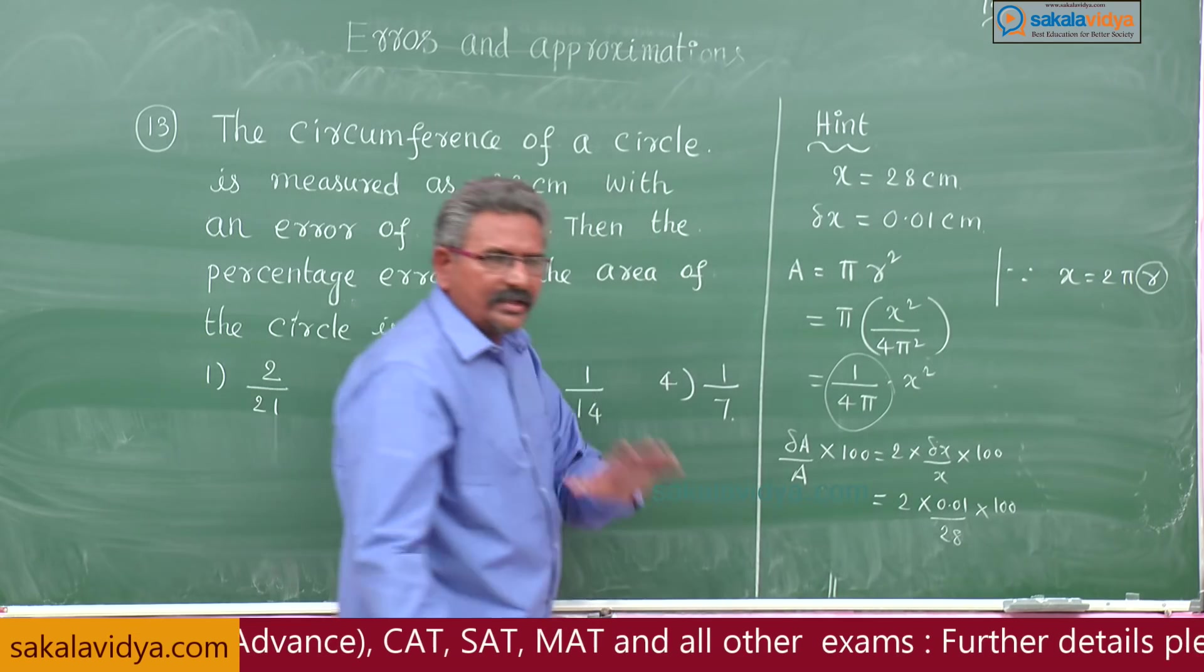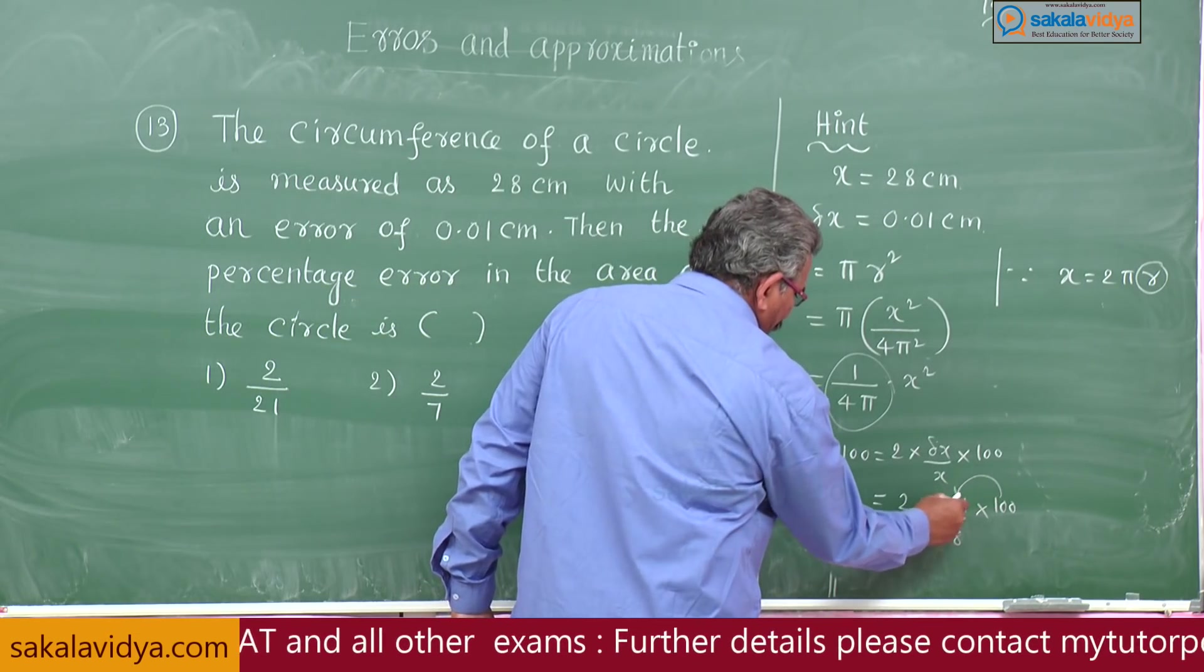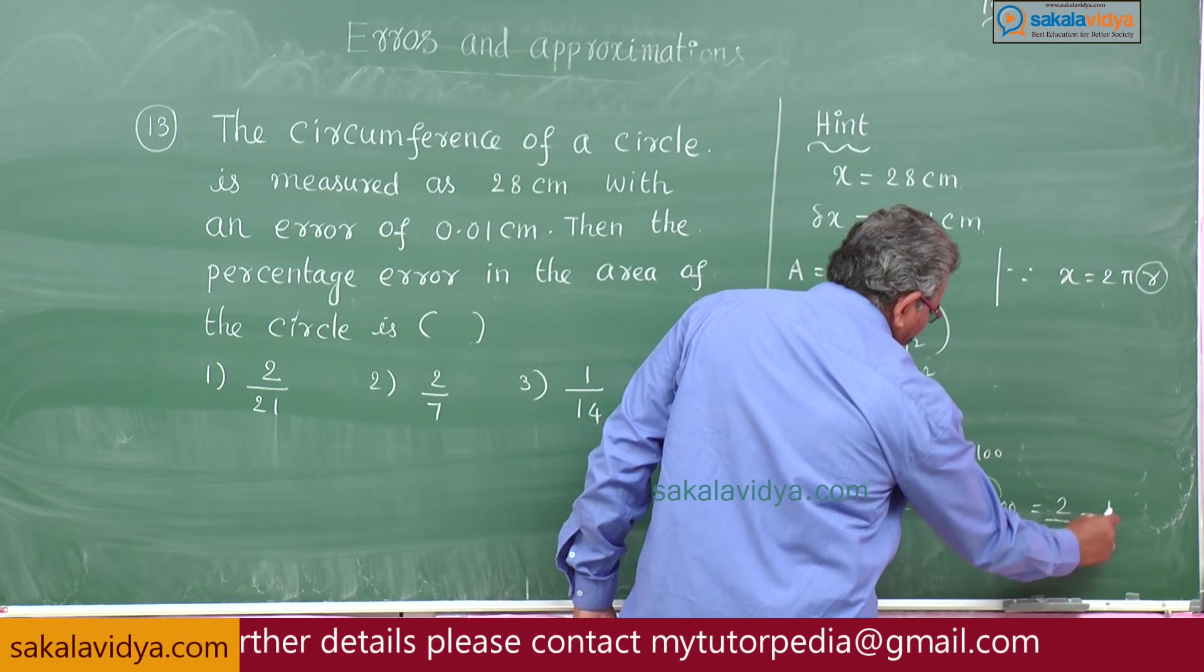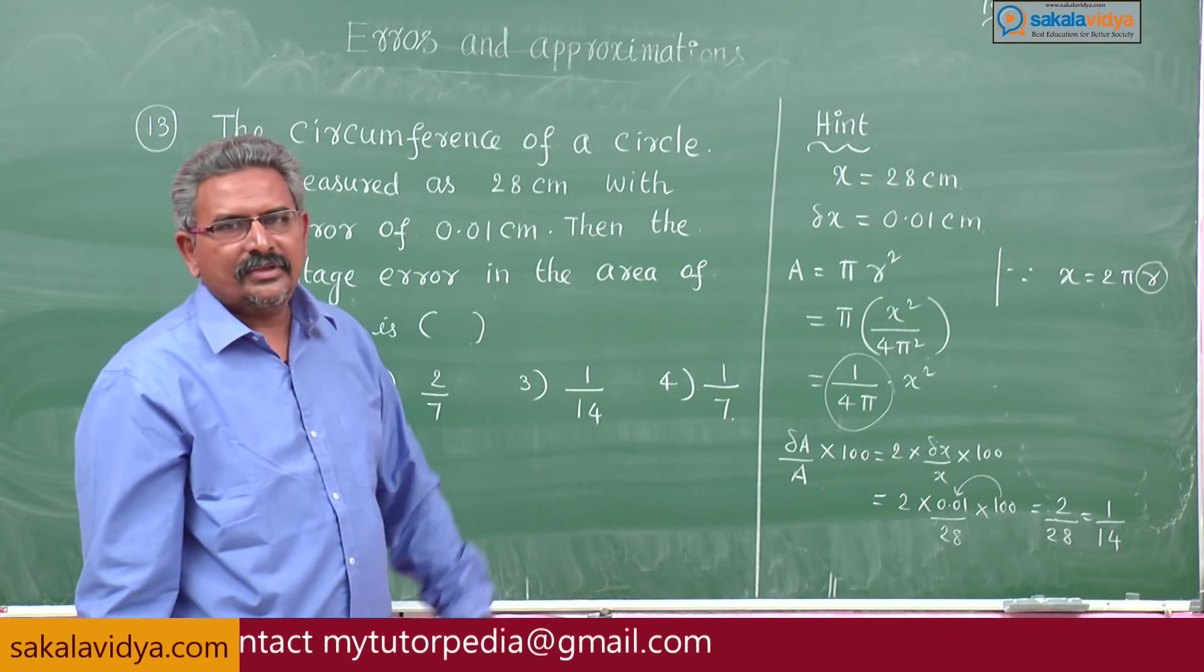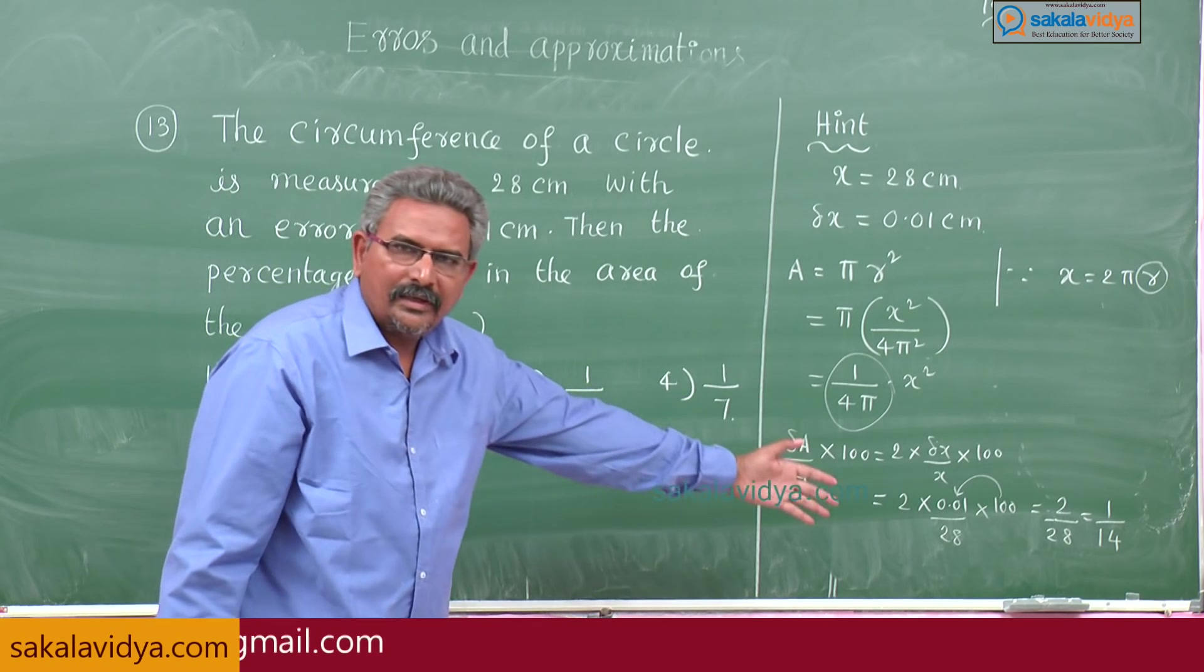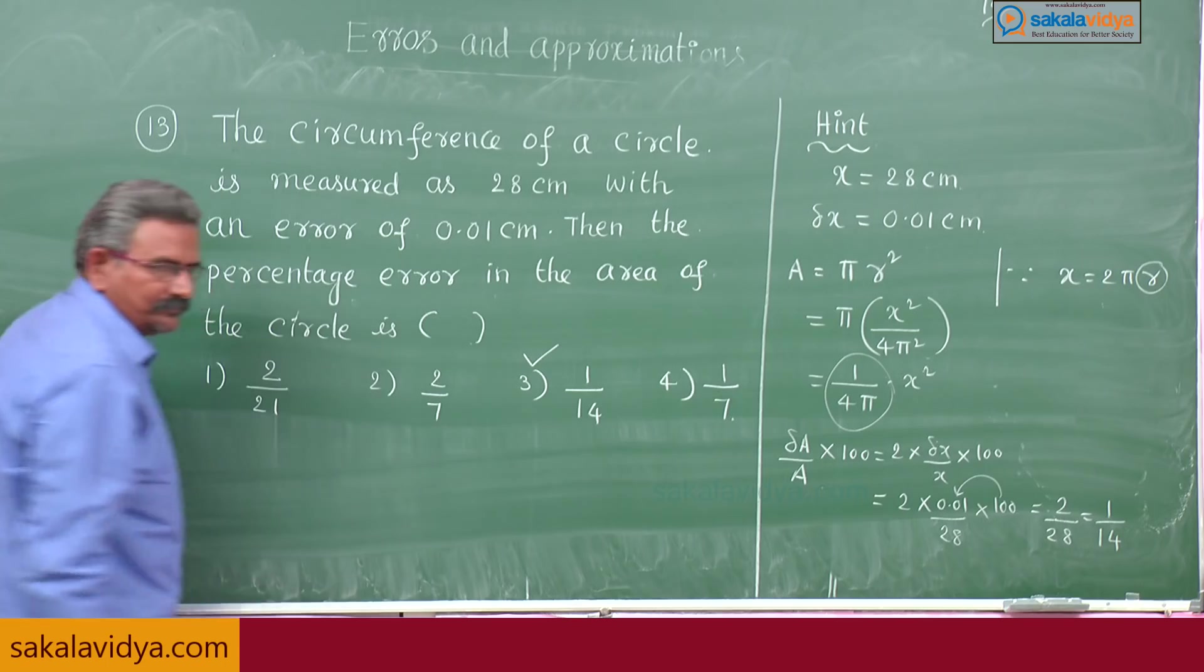Very simple calculation: 100 into 0.01 is 1. So 2 by 28, this will be 1 by 14. I need not simplify, this is the answer. Third option is the right option.